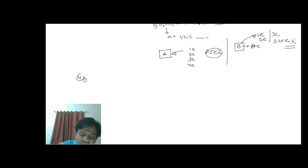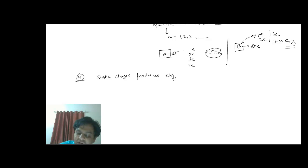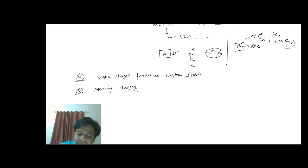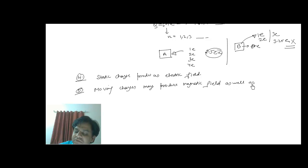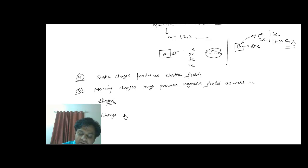The fourth property is that static charge produces an electric field, while moving charges may produce both an electric field as well as a magnetic field.